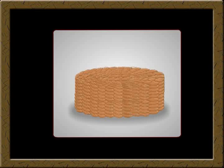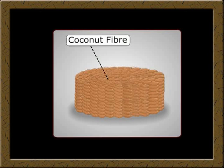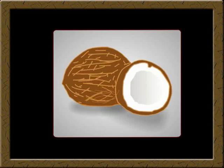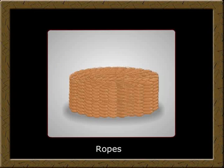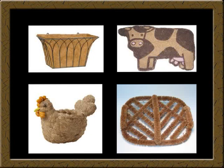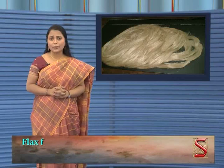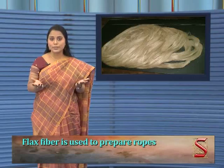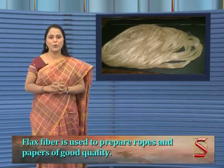This rope is made of coconut fiber. Coconut fiber is obtained from the outer layer of the coconut fruit. With coconut fiber, ropes, dough mats, and many other decorative items are made. Flax is another fiber we get from plants. We get this fiber from the stem of the plant. Flax fiber is used to prepare ropes and papers of good quality.